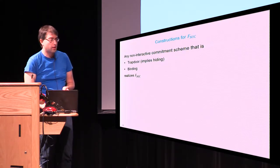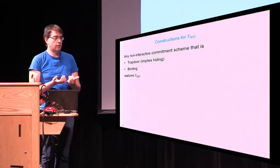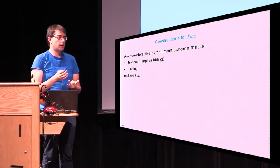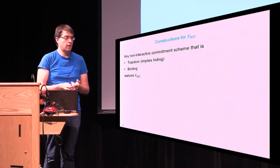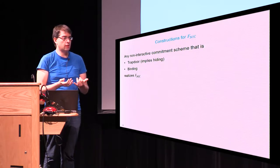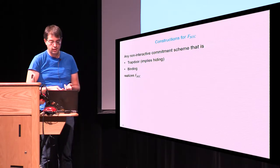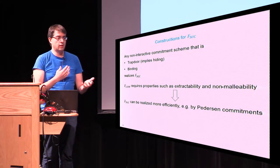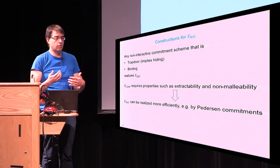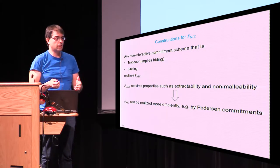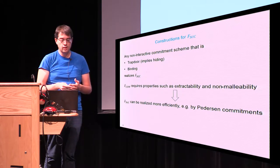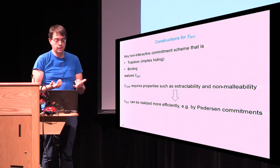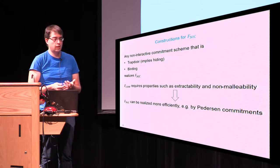For constructions of our functionality, we require trapdoor commitments — which implies the hiding property — and binding commitments. We prove that any commitment scheme that is trapdoor and binding realizes our functionality. In comparison to existing FCOM functionalities in the literature, which may require additional properties such as extractability or non-malleability, we do not require those properties, which allows our functionality to be realized efficiently — for example, using Pedersen commitments.